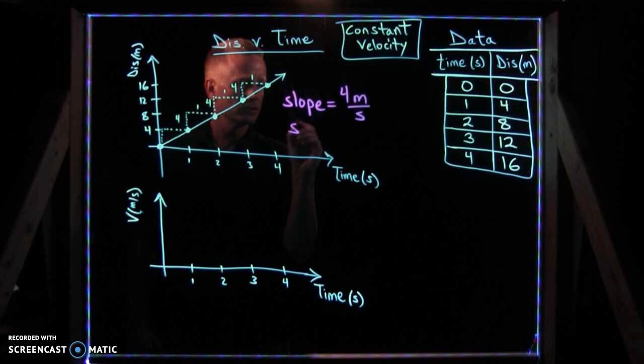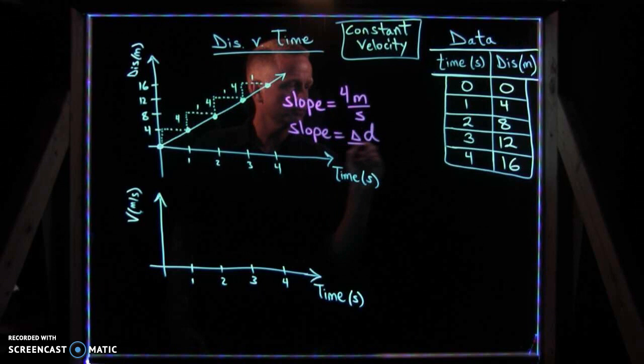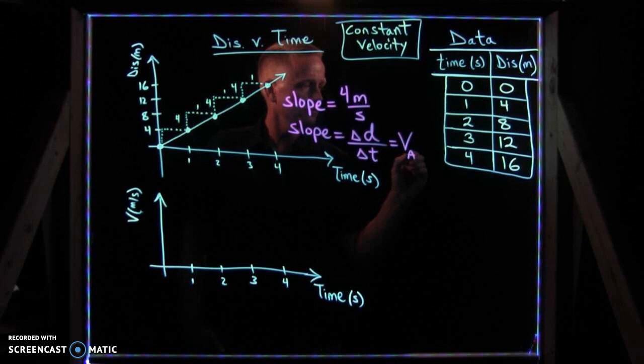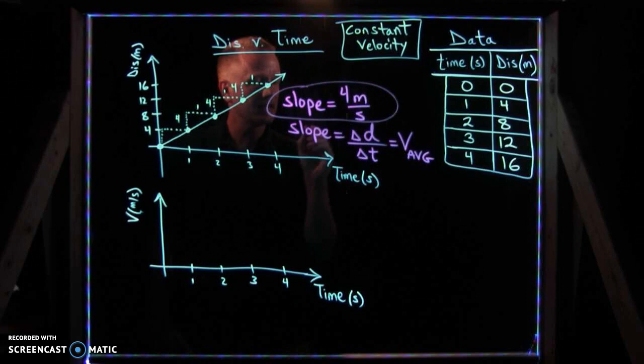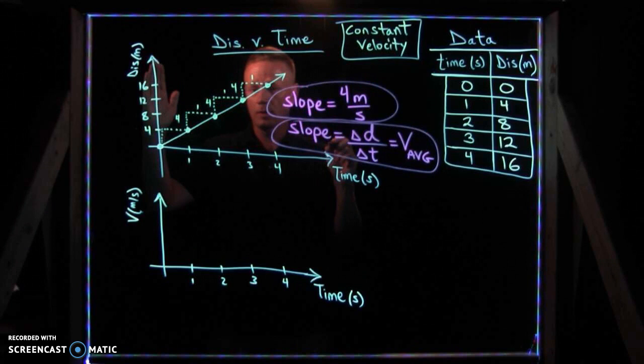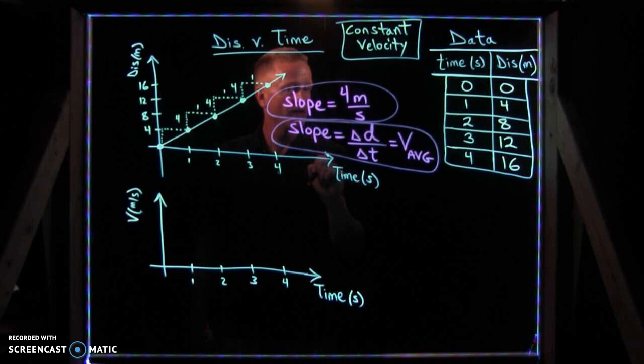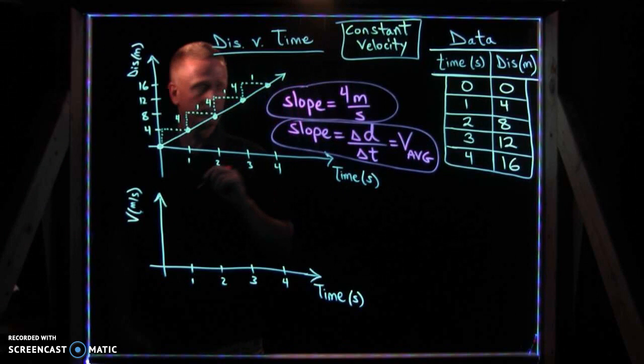And since we're measuring the rate of change of distance over time, the slope of this graph represents the change in your position versus the change in your time, which by definition is your average velocity. Anytime you're measuring the rate of change of distance on the y-axis versus time on the x-axis, by definition, the slope of that, which is the ratio of distance over time, is a measure of your average velocity for that interval of time.